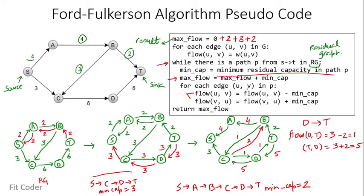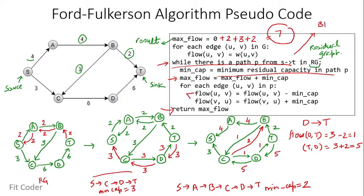After processing all edges in this path, we check the while condition again. From S in the residual graph there are no outgoing edges — only two incoming edges from A and C — so there is no path from S to T. The while loop terminates and we return the maximum flow: 2 plus 3 plus 2 equals 7. So the maximum flow possible from source to sink is 7. One important point: Edmonds-Karp optimized the path-finding by using BFS, which always finds the path with the least number of edges. The time complexity of this algorithm is O(V × E²).